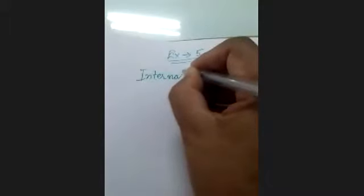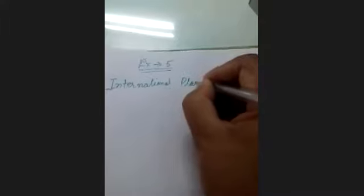In exercise five we will discuss the international place value chart and international place value system. We already discussed this system in previous lectures. Main points we will discuss once again. Same as the Indian place value system, we count these place values from right to left.